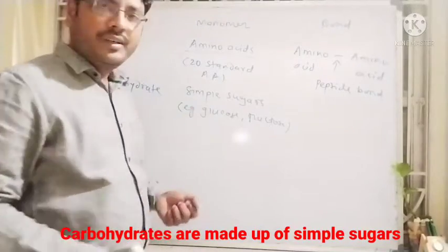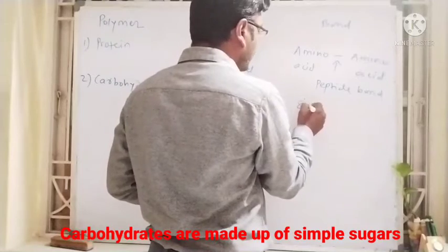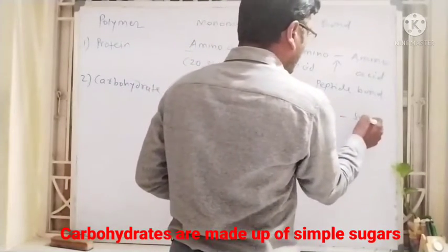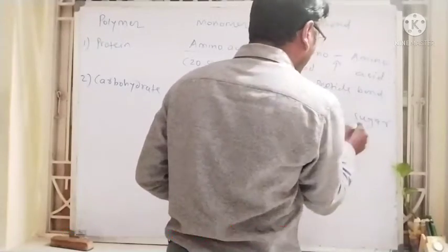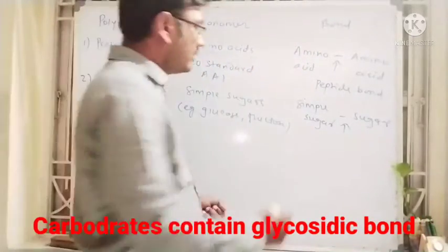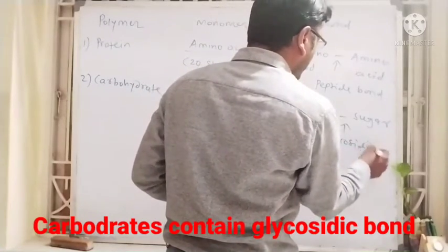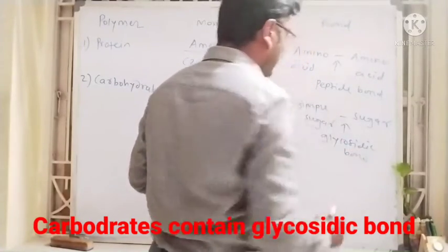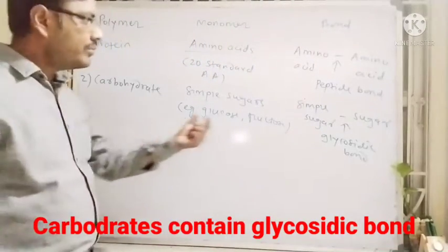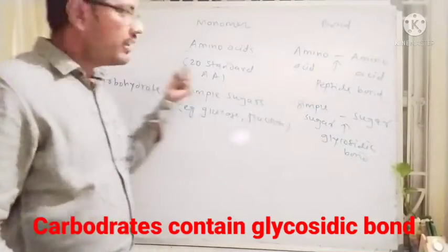And which type of bond is present? The bond present between two sugar molecules — that is, simple sugars — is a glycosidic bond. So the chain of sugars is called carbohydrate, and the chain of amino acids is called protein.